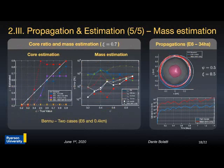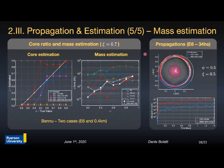Results for the estimation problem show that incorporating the coupled terms increases the accuracy of the estimation, as seen in the core and mass estimation plots on the left side, where using the full model with coupling produces more accurate results than without coupling. The estimation process presents large errors independently of which model is used, due to the ill-conditioned nature of the mascon estimation problem. Propagations performed with parameters estimated using the coupled model show more accuracy than those using the uncoupled model only, as shown on the right side of the slide.